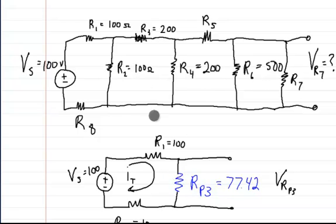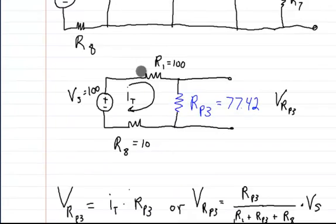So RP3 represents if you put your multimeter, your leads one right here and one right here, that's what you would read, the combination of all of these resistors. So let's scroll down a bit.